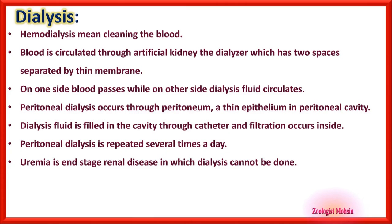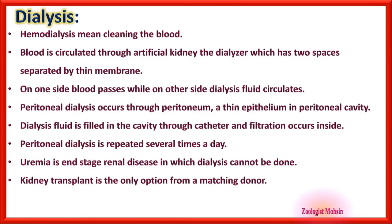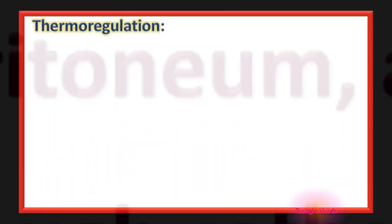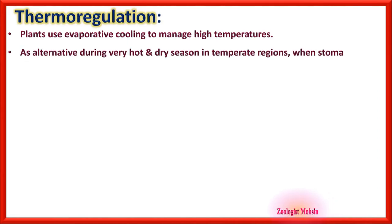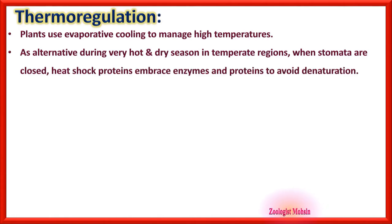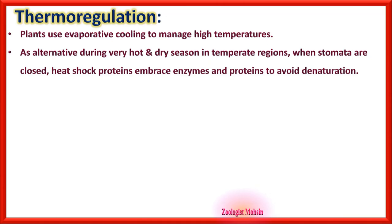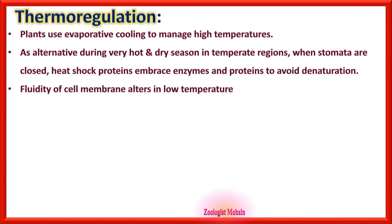Uremia is end-stage renal disease in which dialysis cannot be done and the only option is kidney transplant. For thermoregulation, plants use evaporative cooling to manage high temperatures. During very hot and dry seasons in temperate regions when stomata are closed, heat shock proteins embrace enzymes and proteins to avoid their denaturation.